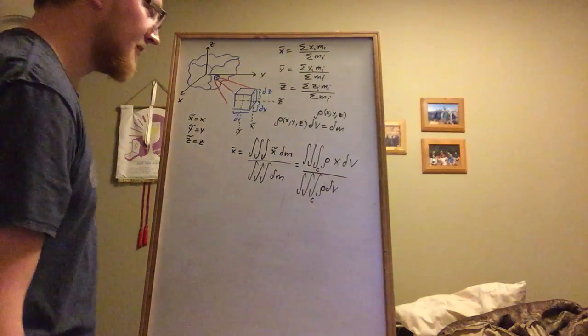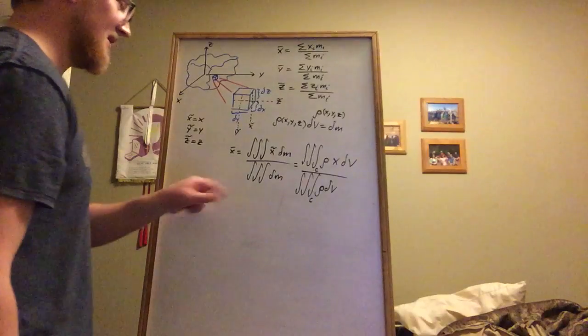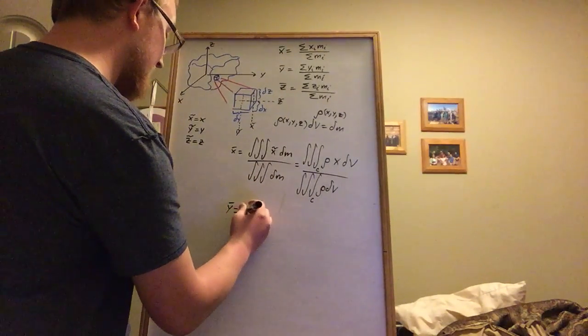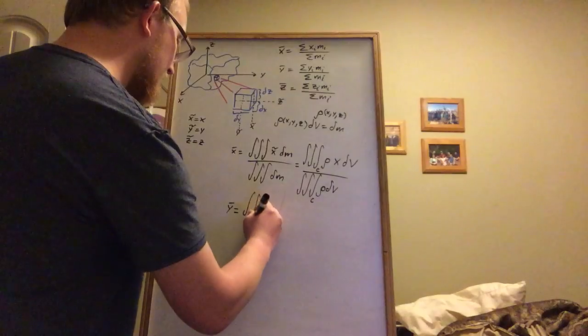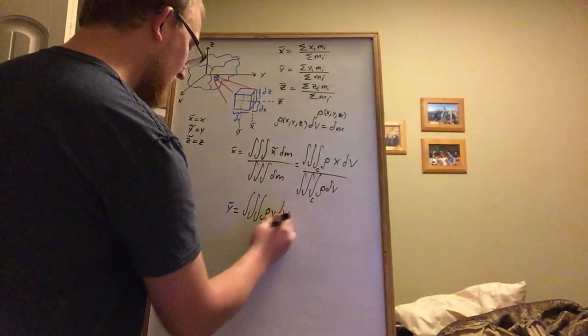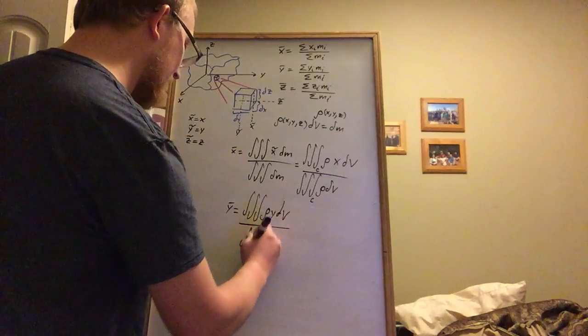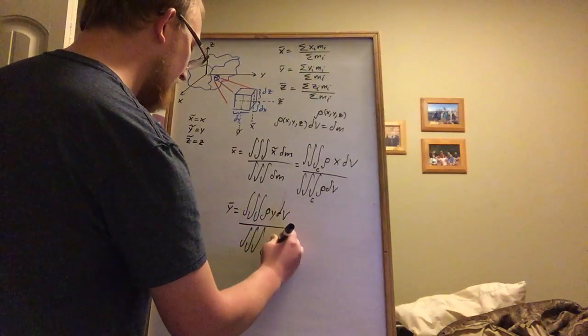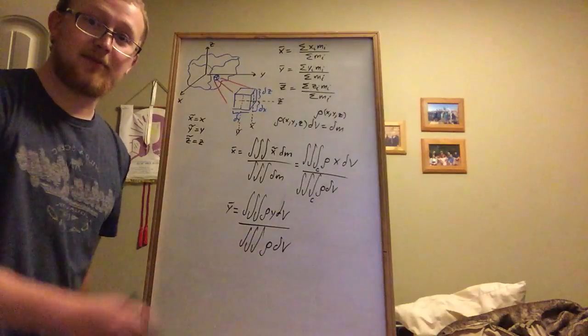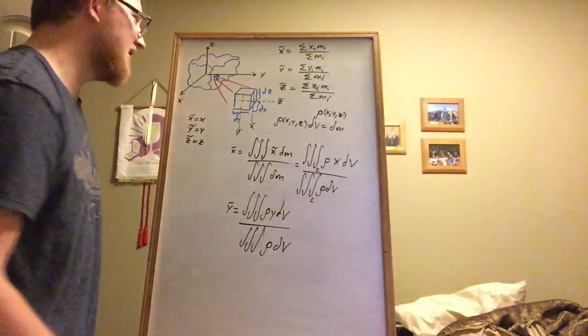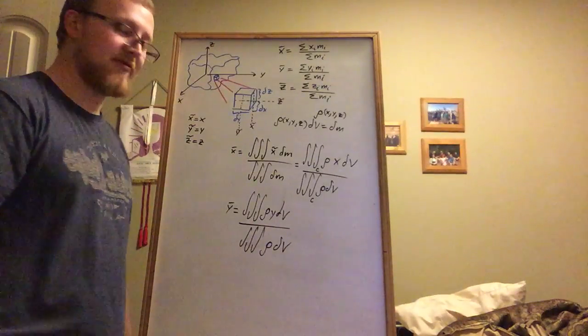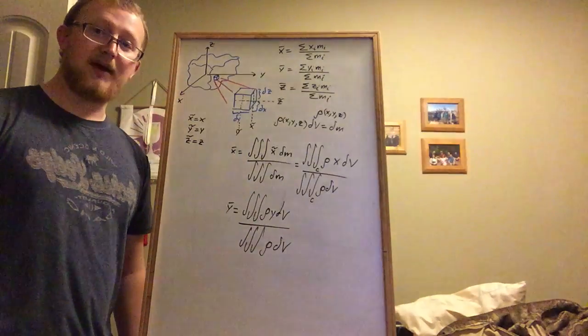So as long as you get your bounds right, this will work. And the cool thing is that it's symmetrical. So y bar is also equal to the triple integral of ρ y dV divided by the triple integral of ρ dV, otherwise known as the mass. And you can write the same thing for z bar.